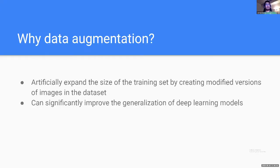Firstly, just about data augmentation — I hope a lot of you are already familiar with this concept. Essentially, data augmentation is used to artificially expand the size of the training set by creating modified versions of images in the dataset. It's very often used in computer vision, and there's been a track record that it can significantly improve the generalization of deep learning models. Using data augmentation was really able to push the performance of classification on ImageNet.